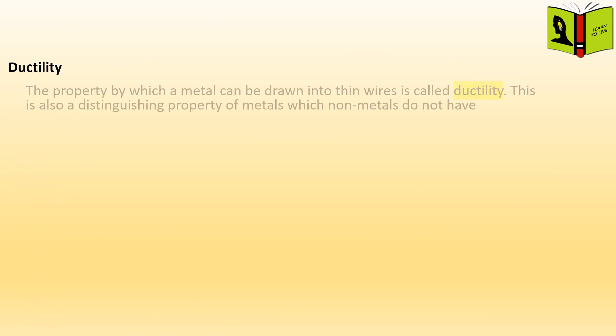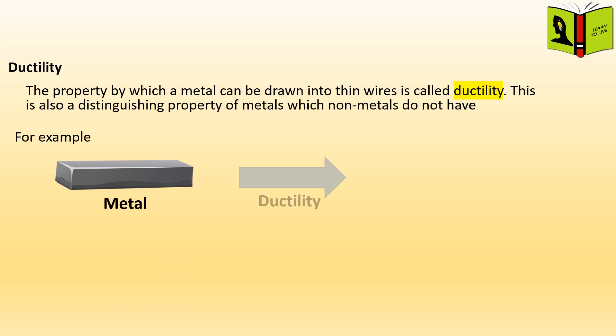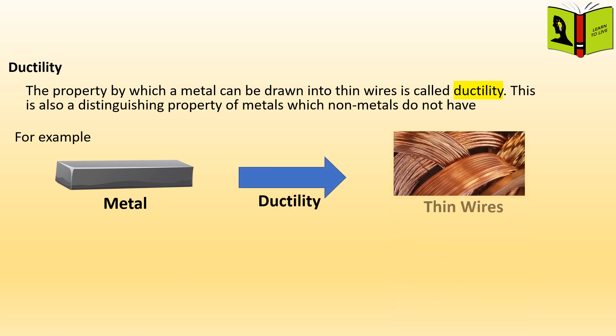Ductility. The property by which a metal can be drawn into thin wires is called ductility. This is also a distinguishing property of metals which non-metals do not have. For example, consider a metal as shown. If this metal undergoes ductility, we can observe that the metal has been drawn into thin wires.